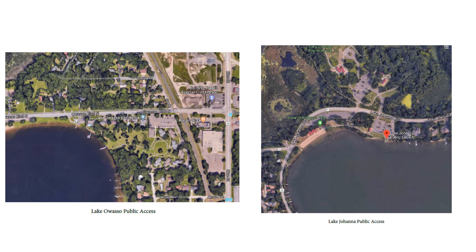Each set of route maps includes satellite images to help you find where the access is when you get close. These satellite images will include a gray or orange pin to mark the location of the access, as well as nearby intersections or landmarks. Remember to verify that you are at the public water access before you begin monitoring.